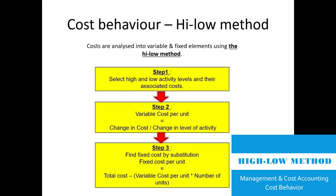The high-low method is very useful and important. It has three steps. Step one is to choose the high and low activity levels. For example, if activity in January was ten thousand, February eight thousand, and March twelve thousand, you choose the highest and lowest. Step two: use the formula — change in cost divided by change in level of activity — to find the variable cost per unit.